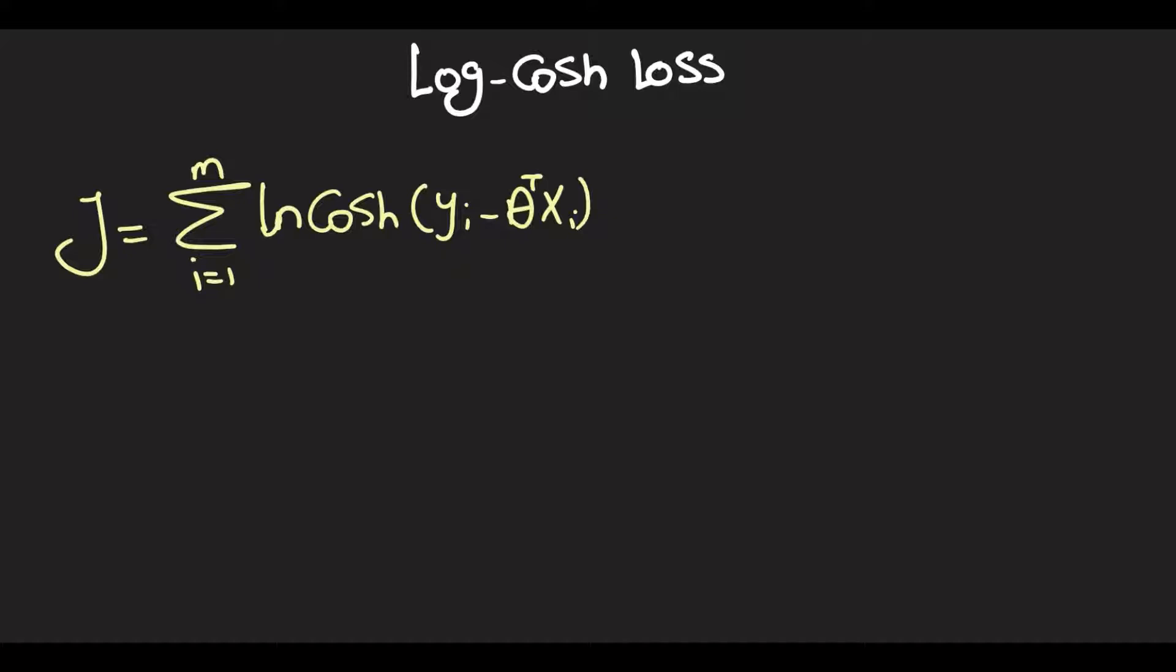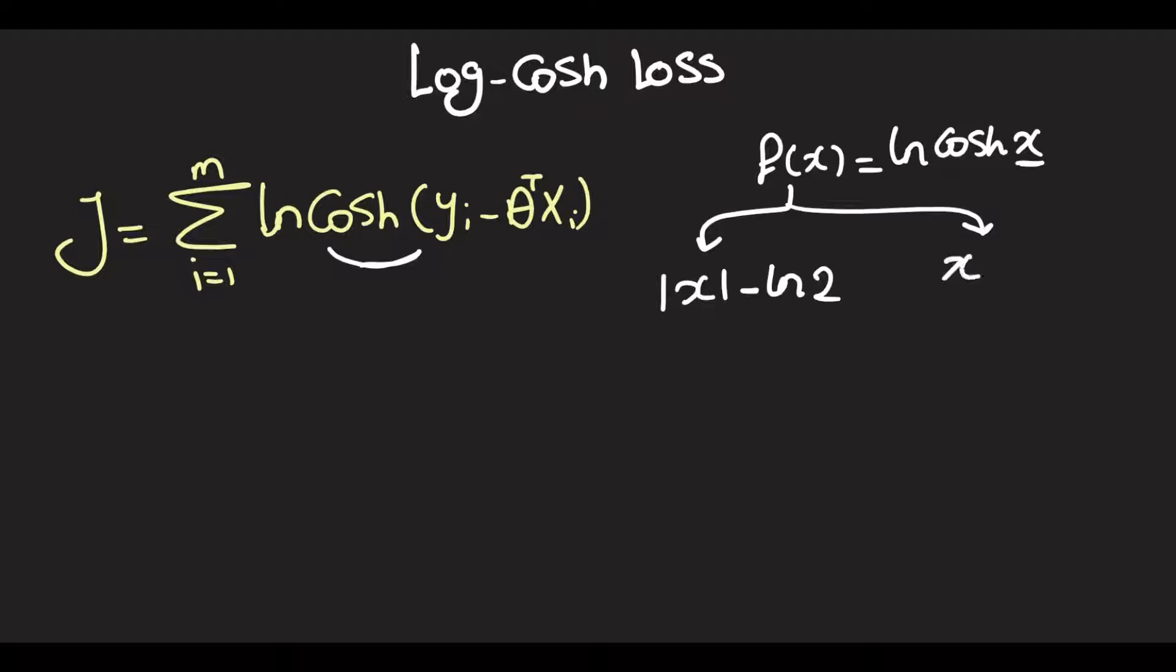What's so interesting about this is the log-cosh function itself. If we analyze it, let me write down f of x equals the natural log of cosh of x. Then we can observe that for large values of x, this approaches absolute x minus the natural logarithm of 2. And for small numbers, this is almost x squared over 2.